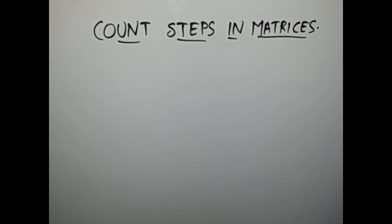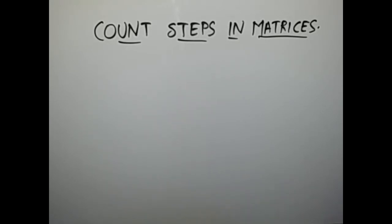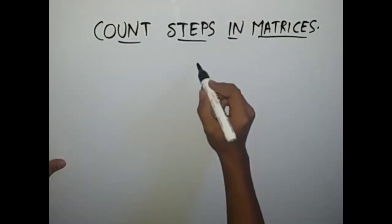In this problem, we will be given a 2D matrix of n rows and n columns. N-squared elements will be fitted into it, which will be randomly shuffled. What we are going to do is just travel from the first element to the last element.